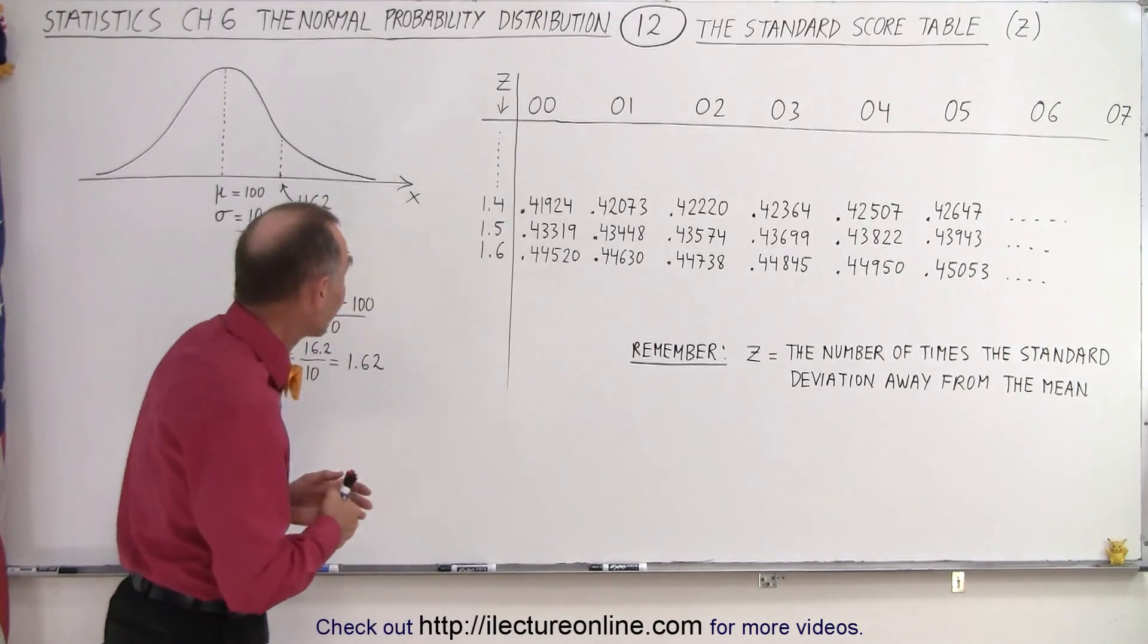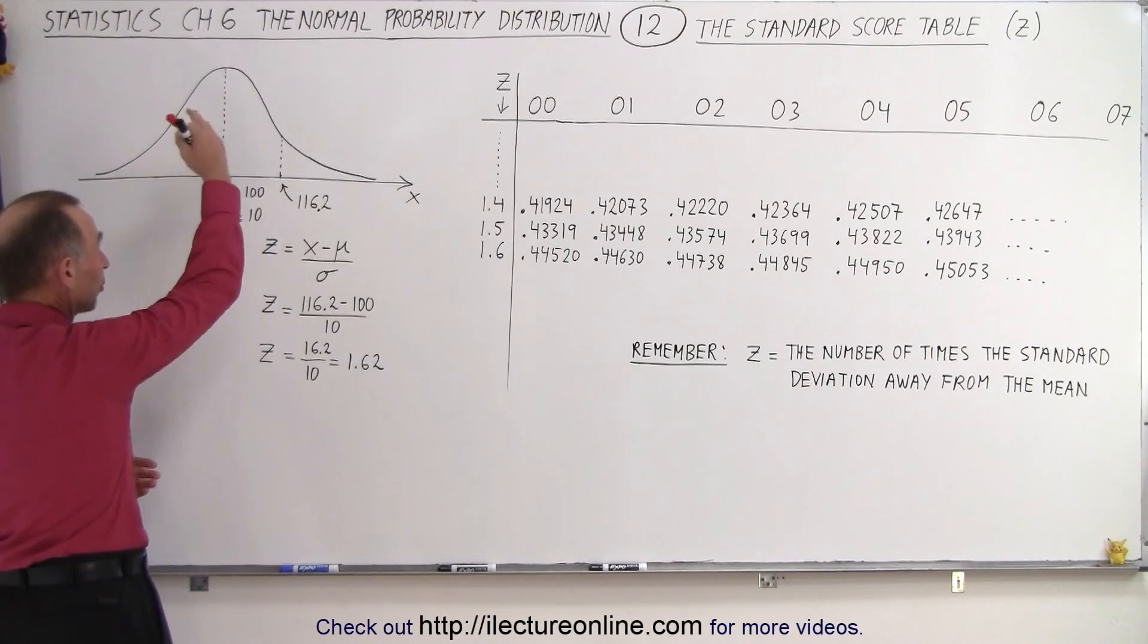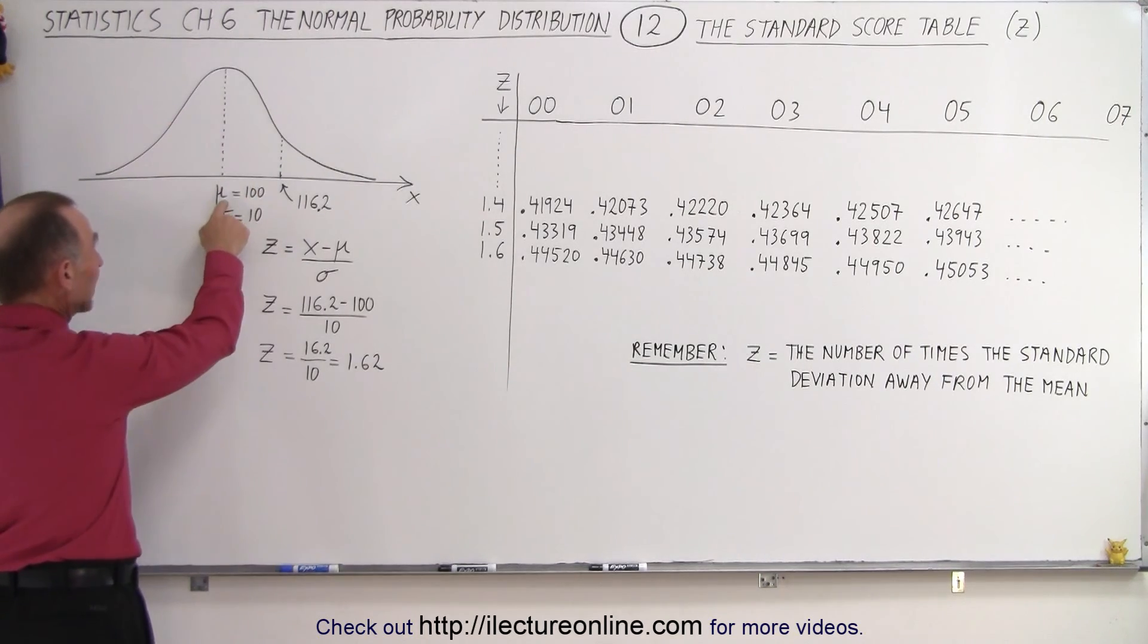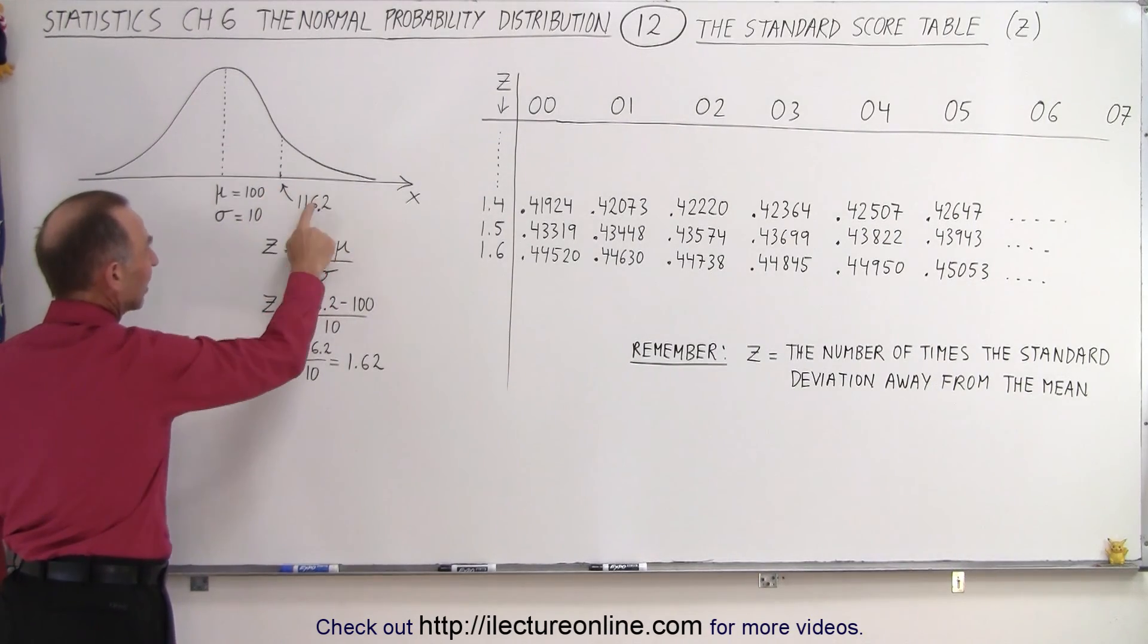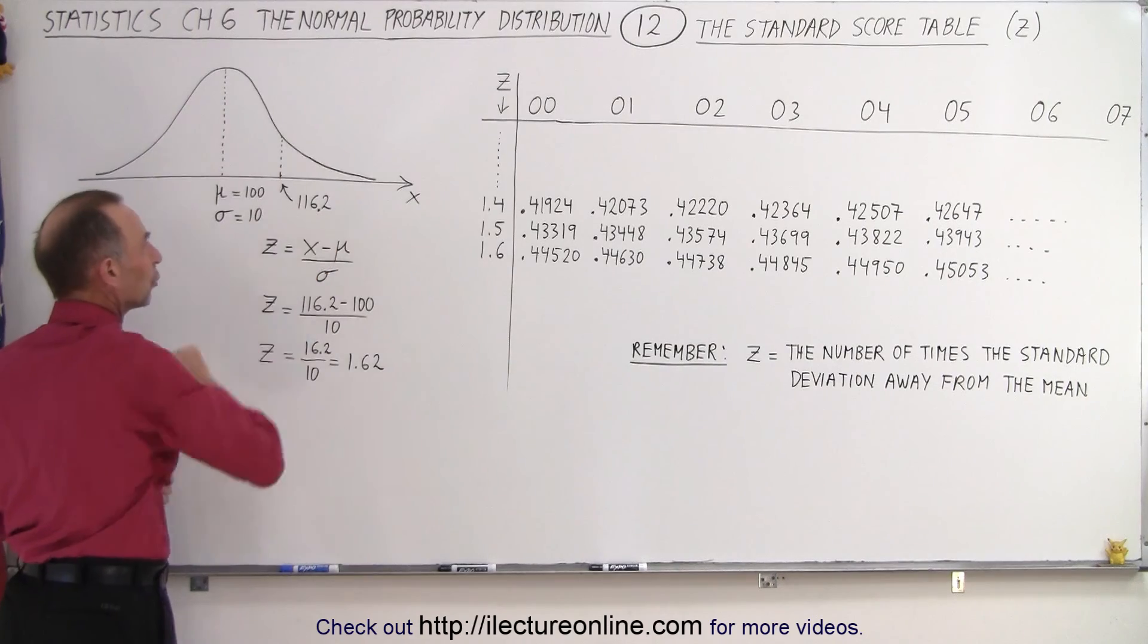So let's go back to something we're familiar with. Here we have a normal distribution. Let's say that the mean or average is 100 and the standard deviation is 10. And we're looking for a point where X takes on the value 116.2.